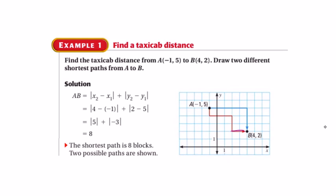I'm going to take x2 and it doesn't matter which point I label as x2, y2 and which point I label as x1, y1. Typically speaking, point A is going to be our x1, y1 and point B is going to be our x2, y2. So I substitute those in. I then find the differences and take the absolute values and the shortest path is 8 blocks.